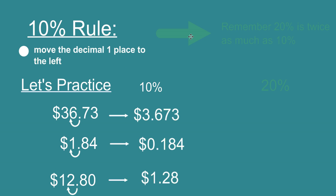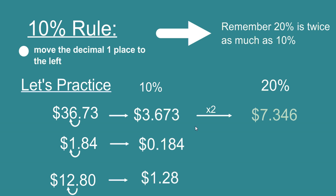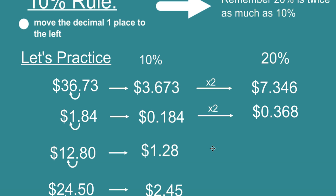And you can actually use this idea to quickly find 20% of a number as well because 20% is twice as much as 10%. So take this value times 2 and then if you rounded to the nearest cent it would be $7.35. Once again if we round to the nearest cent on this one we would have $0.37.